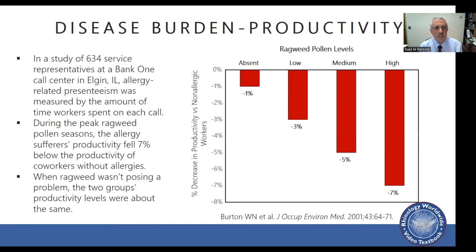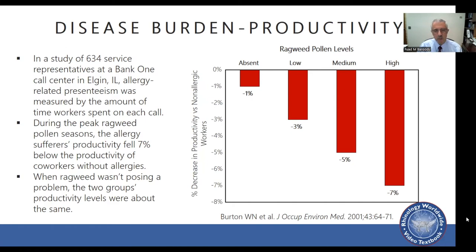A study of 634 service representatives at a Bank One call center in Elgin, Illinois looked at allergy-related presenteeism by measuring time workers spent on each call. During the peak ragweed pollen season, allergy sufferers' productivity fell 7% below co-workers without allergies. When ragweed wasn't causing a problem, the two groups' productivity levels were about the same. As pollen counts increased, productivity decreased — peaking at about a 7% reduction compared to non-allergic peers.